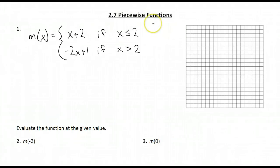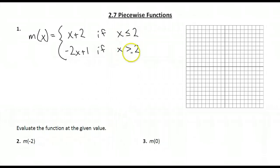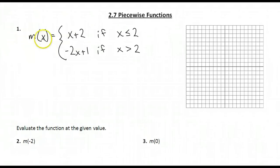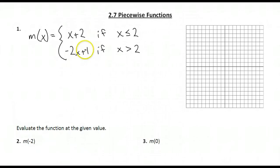A piecewise function is like a step function in that a piecewise function is a function made up of parts of different equations — different functions — with the x values controlled by if statements. The difference is, in a piecewise function, the parts that make it up are not just horizontal lines, they're linear equations. If we look at this piecewise function, we have m of x equals two different equations: x plus 2, and negative 2x plus 1. So m of x is made up of two different lines, and those lines are controlled by these if statements.